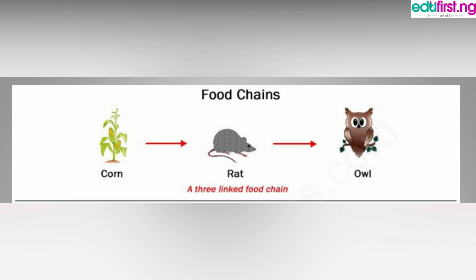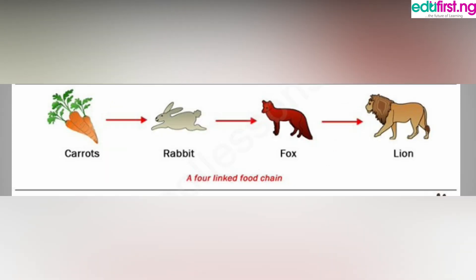In the next food chain, you can see carrots at the beginning. Every plant starts a food chain — they are the primary producers. The rabbit eats the carrots, the fox eats the rabbit, and the lion eats the fox. That's how energy is transformed.